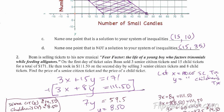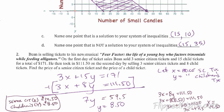Fear Factor — the life of a young boy who factors trinomials while feeding alligators. On the first day, Bean sold 3 senior citizen tickets and 15 child tickets for $171, giving equation 3x + 15y = 171. On the next day, 3 senior citizen tickets and 8 child tickets equaled $111.50. You have those two equations — I would use elimination: multiply the second one by negative 1, solve it, and you get y equals 50 cents.